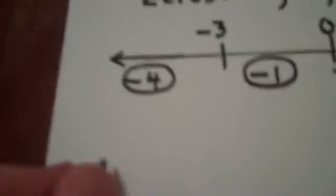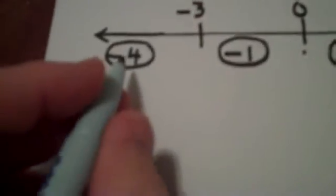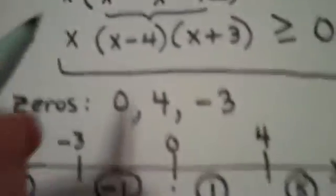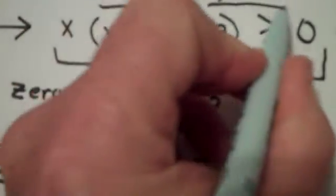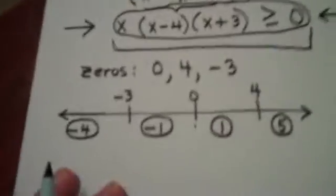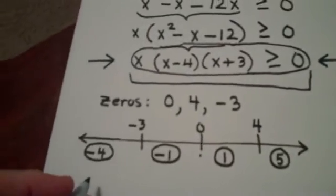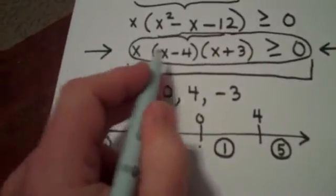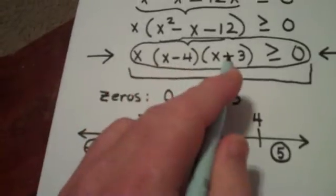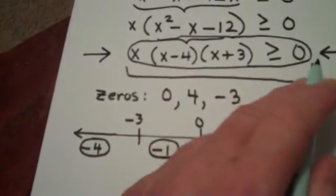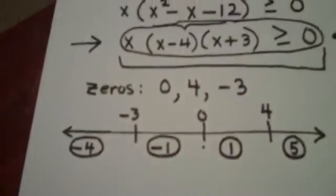You need to pick a number that's in that region. Now, what I do with each one of these numbers in turn is I test them into my original inequality and see if they work or not. So my original inequality is x times x minus four times x plus three is greater than or equal to zero. And I test them one at a time.